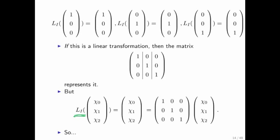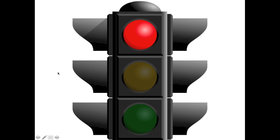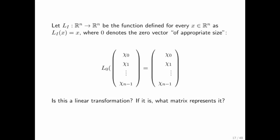Because this is the identity vector function, we're going to call this matrix the identity matrix. Now you can go and answer the question of whether the identity function for vectors of size n — defined by the identity function of x equals x — is also a linear transformation. You should justify that. And the answer is yes, it is a linear transformation.